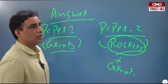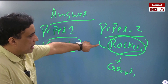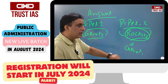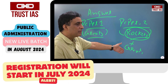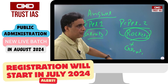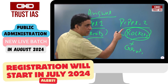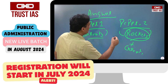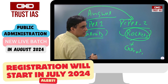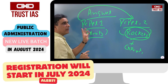Forget UPSC for a moment, think logically. If you are writing the answer about rockets, can you not talk about gravity? Without gravity, you simply cannot write anything about rockets. So when you write an answer in Paper 2, you have to pick up the theory, the thinkers, and the concepts from Paper 1.